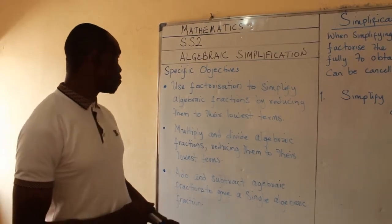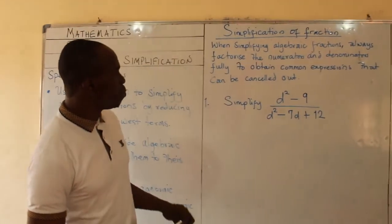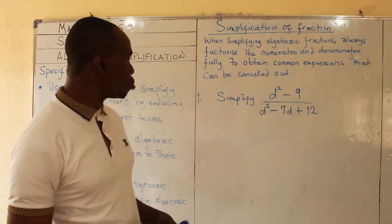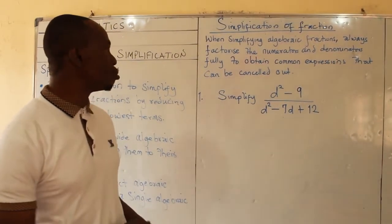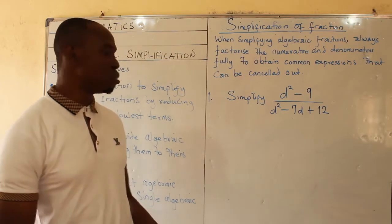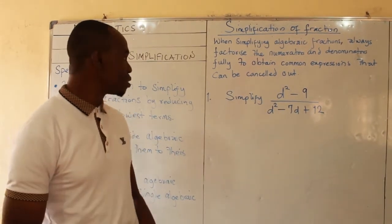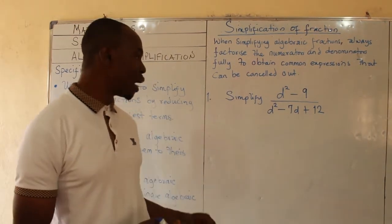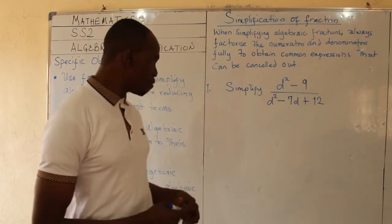The first objective is to know how to reduce or simplify algebraic fractions to their lowest term. The first thing to always do when you have an algebraic fraction to simplify is: when simplifying algebraic fractions, always factorize the numerators and the denominators fully to obtain common expressions that can be cancelled out. It is always necessary to factorize the numerator and the denominator so that you can figure out if there are common terms that can cancel out.